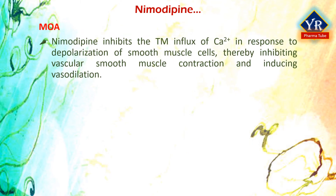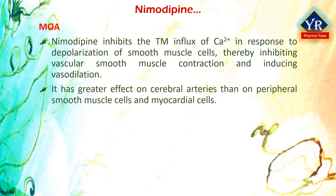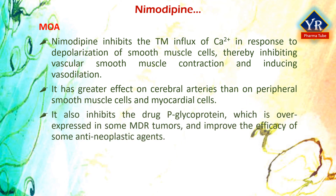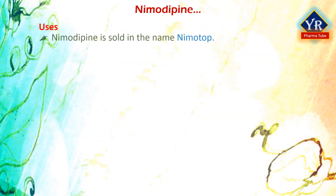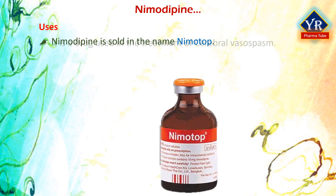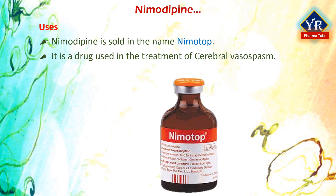Nemodipin inhibits the transmembrane influx of calcium ions in response to depolarization in smooth muscle cells, thereby inhibiting vascular smooth muscle contraction and inducing vasodilation. Nemodipin has a greater effect on cerebral arteries than on peripheral smooth muscle cells and myocardial cells, probably because this agent can cross the blood-brain barrier due to its lipophilic nature. This agent also inhibits the drug efflux pump P-glycoprotein, which is overexpressed in some multi-drug resistant tumors, and may improve the efficacy of some antineoplastic agents. Nemodipin is sold under the brand name Nemotop and is a second generation calcium channel blocking agent used in the treatment of cerebral vasospasm after subarachnoid hemorrhage. It is not widely used and has not been implicated in causing clinically apparent acute liver injury.